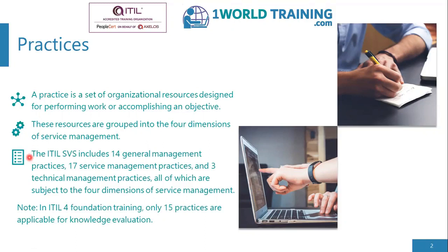The ITIL SVS, the service value system, includes 14 general management practices, 17 service management practices, and three technical management practices, which means there are three types or categories of practices making up a total of 34, all of which are subject to the four dimensions of service management — meaning every practice includes resources from all four dimensions.